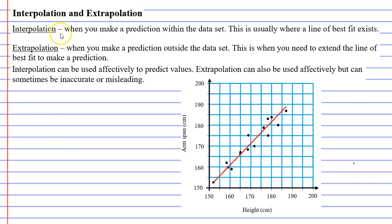When talking about interpolation, it says when you make a prediction within the data set. When we look at this scatter plot, you'll notice that we've got a lot of points